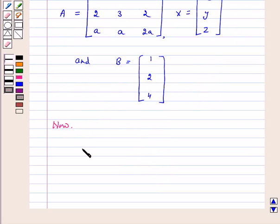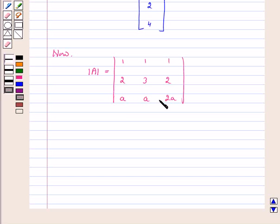that is equal to the determinant 1, 1, 1; 2, 3, 2; a, a, 2a. Clearly we can take a as a common factor from r3, so by taking out a as a common factor from r3 we get determinant A is equal to a into the determinant 1, 1, 1; 2, 3, 2; 1, 1, 2.